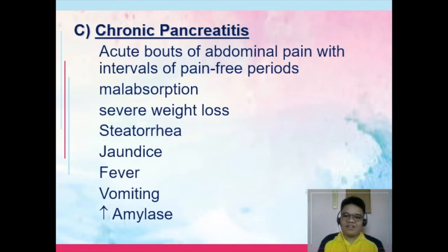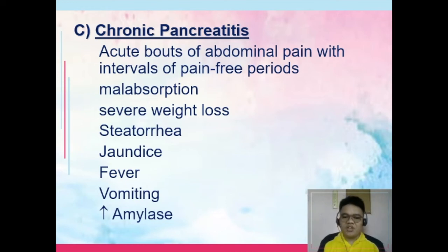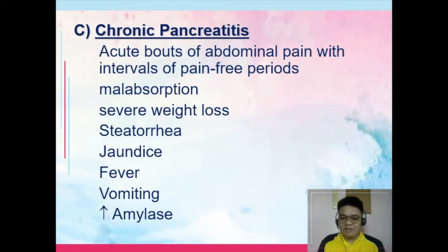In chronic pancreatitis, there are acute bouts of abdominal pain with intervals of pain-free periods, so it tends to be recurrent. There is malabsorption, severe weight loss, steatorrhea — the presence of fat in stools — as well as jaundice, fever, vomiting, and an increase in amylase. Notably prominent in chronic pancreatitis is the increase of amylase.